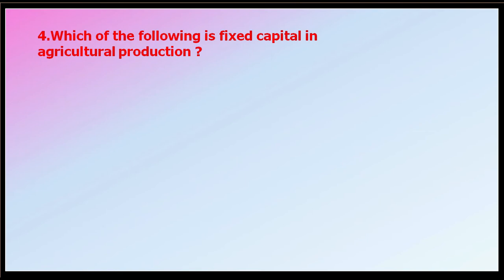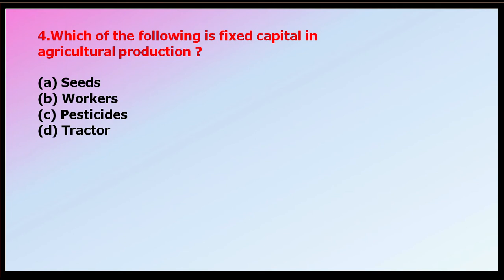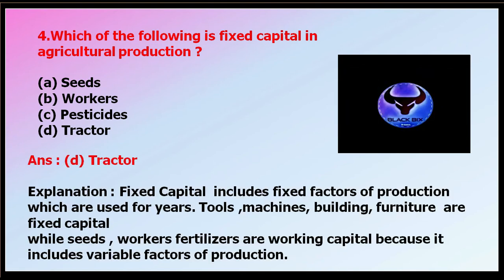Question number four: which of the following is fixed capital in agricultural production? The answer is tractor. Fixed capital refers to items used for many years, like tools, machines, buildings, and furniture — a tractor is a machine, so it is fixed capital. Seeds, workers, and fertilizer are working capital because they are variable factors of production.